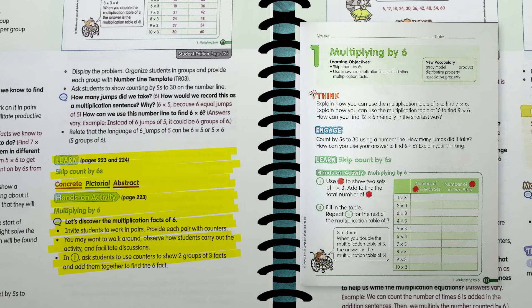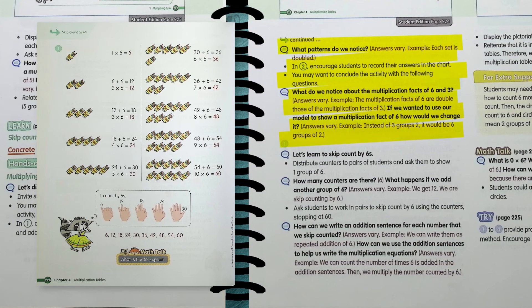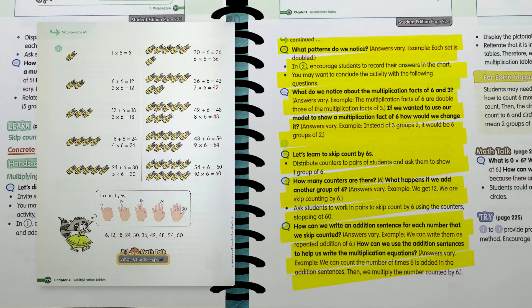During the learn section, your students can look at the example in the student book by first completing the activities with counters to see the pattern that multiplying by 6 is really doubling multiplying by 3. Your students will learn that they can multiply by 6 by doubling 3s, skip counting, or even using addition.